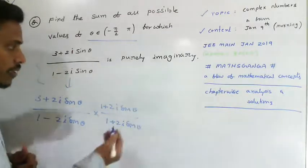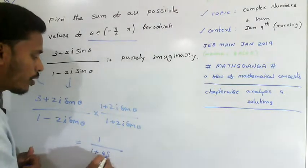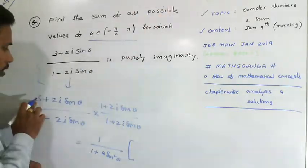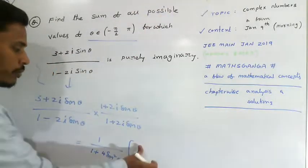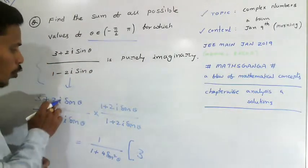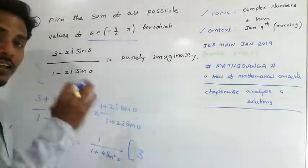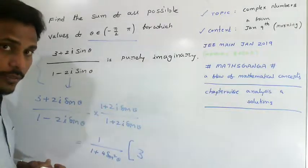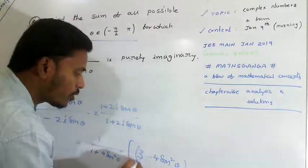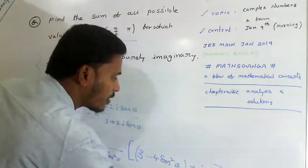In the numerator we need to multiply the two complex numbers. The denominator becomes 1 + 4sin²θ. In the numerator: 3×1 = 3, then 3×2i sinθ is imaginary, 2i sinθ×1 is imaginary, and 2i sinθ × 2i sinθ = 4i² sin²θ = -4sin²θ since i² = -1. So the real part of the numerator is 3 - 4sin²θ.